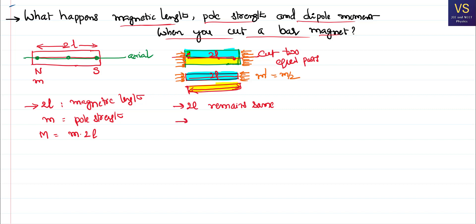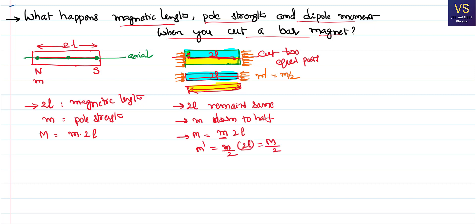So when cut along the axial line: 2L remains the same, and pole strength reduces to half. Now what happens to the magnetic moment M? Magnetic moment is the product of pole strength and the length of the magnet. When you cut it, pole strength became m/2 but the length remains 2L, so m × 2L gives capital M/2. Magnetic moment is reduced to half.